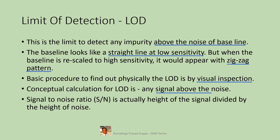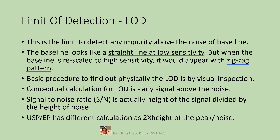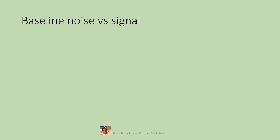Signal-to-noise ratio, S/N, is the height of the signal divided by the height of the noise. It is a simple mathematical expression — the ratio of signal and noise. You don't need to worry about how to calculate it; the software of your HPLC will do this automatically. Note that USP and EP have different calculations: two times the height of the peak divided by the noise. This gives double the result compared to the simple signal divided by noise method.